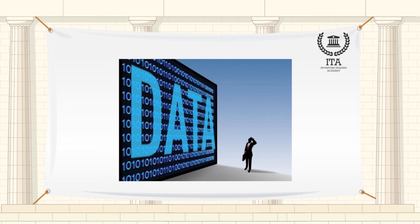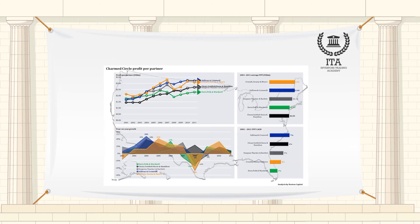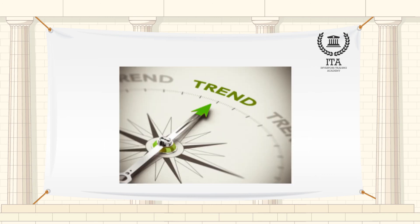Ratio analysis as a tool possesses several important features. The data, which are provided by financial statements, are readily available. The computation of ratios facilitates the comparison of firms which differ in size. Ratios can be used to compare a firm's financial performance with industry averages. In addition, ratios can be used in a form of trend analysis to identify areas where performance has improved or deteriorated over time.